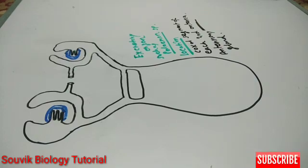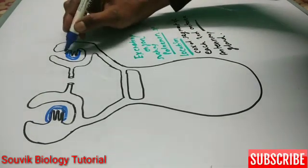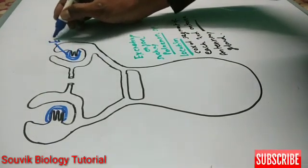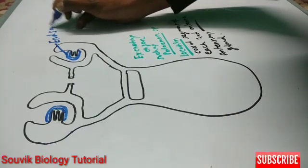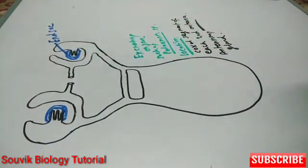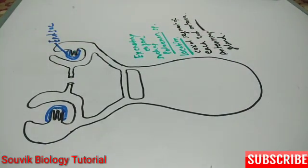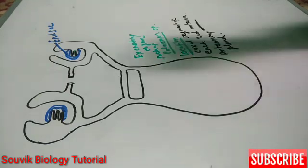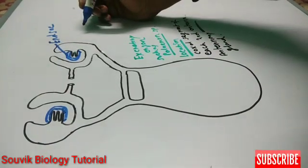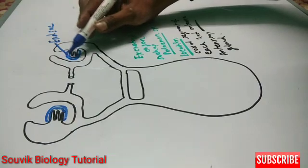Now this is the diagrammatic view of green gland. It is end sac which is the first part of the green gland. Green gland is mainly consisted of three parts. One is end sac which is a bean shaped structure, also contains blood lacuna and it is two layered.